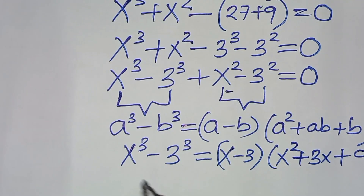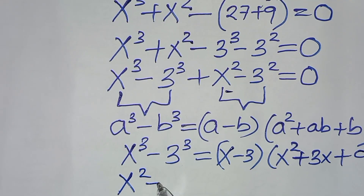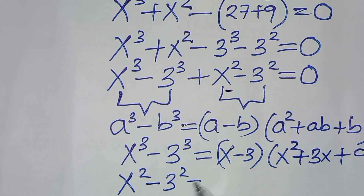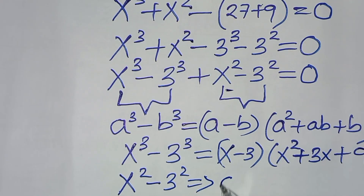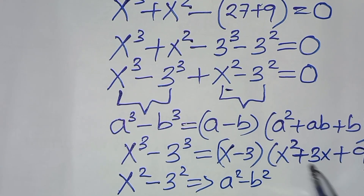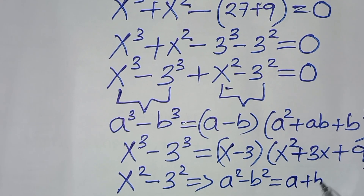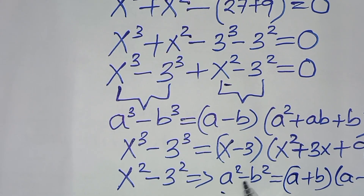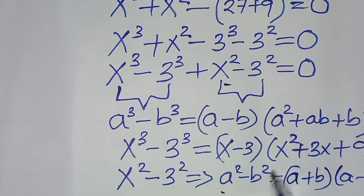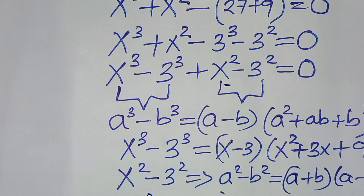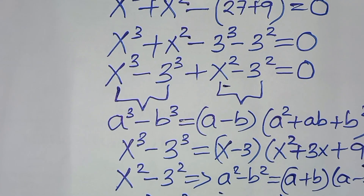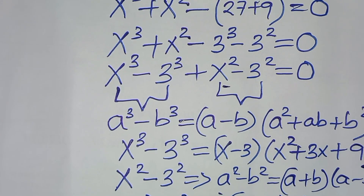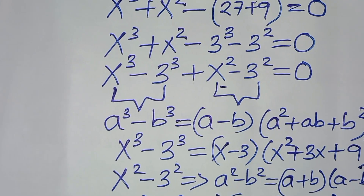The next part is x squared minus 3 squared, which is the difference of two squares, expressed as a squared minus b squared, equal to a plus b times a minus b. So x squared minus 3 squared equals x plus 3 times x minus 3. Let's call this equation 2.